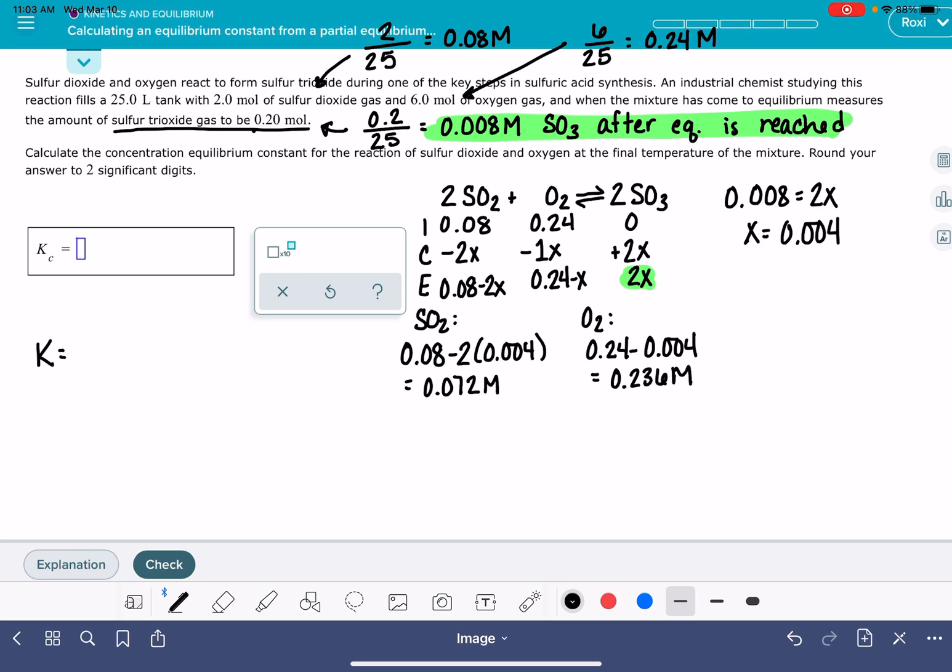And then for our SO3, we already know what it is, but if we just want to go through the math, we said it was 2x, and x is 0.004, which is 0.008.